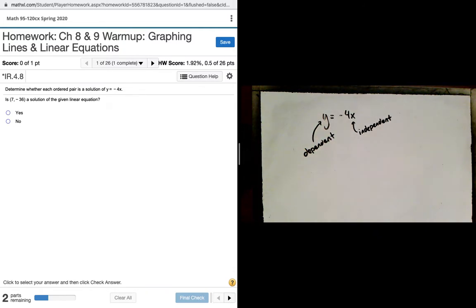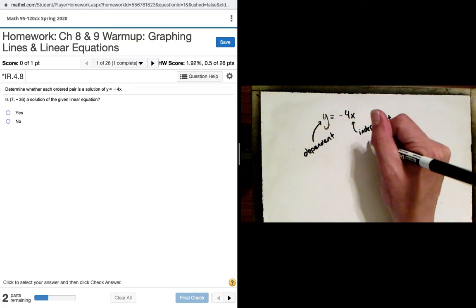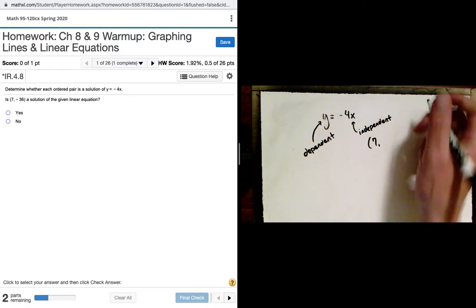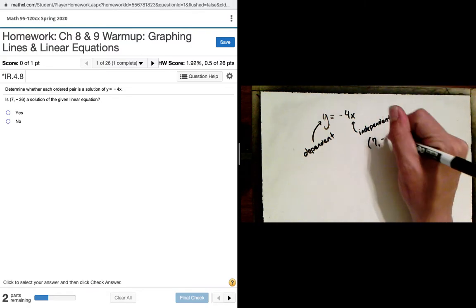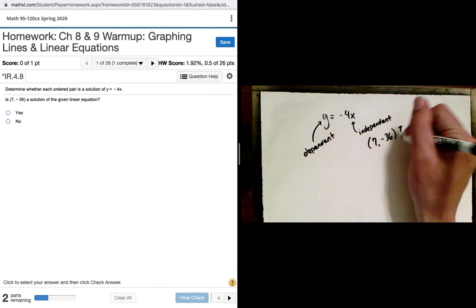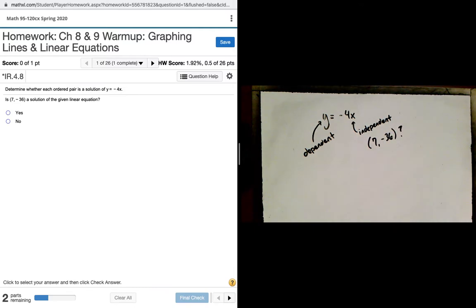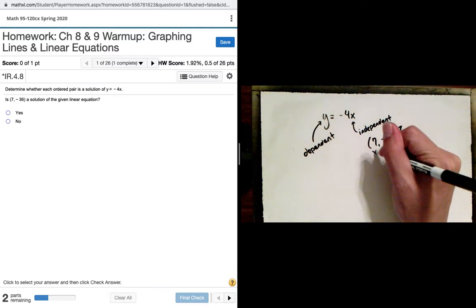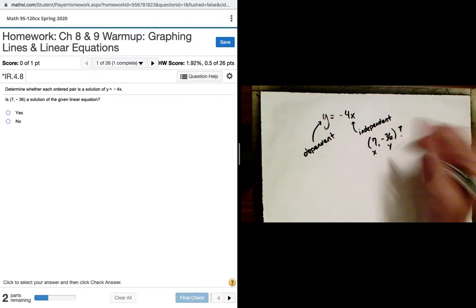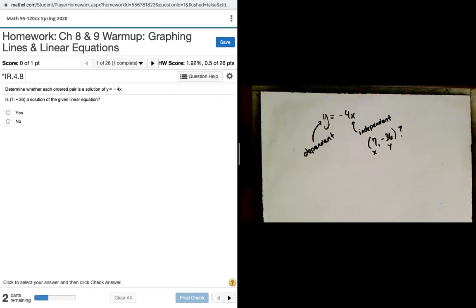We can plug in values for x, we get corresponding values of y out. So in this one, they wanted to know, is the point 7 comma negative 36 on the line? What we're going to do is identify that the 7 is our x value, the negative 36 is our y value. We're going to plug it in, see if we get a true statement.